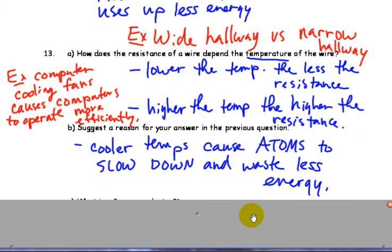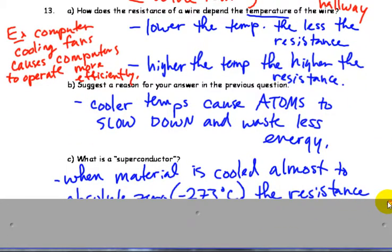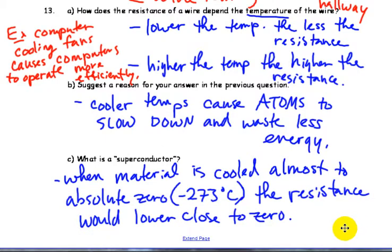So cooler temps cause atoms to slow down and waste less energy. That kind of leads into superconductor. When a material is cooled down to almost absolute zero, theoretical temperature where all atomic motion stops, the resistance would be very close to zero if we could cool things down that much.